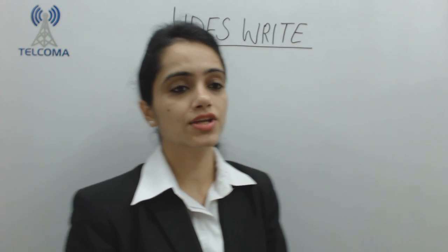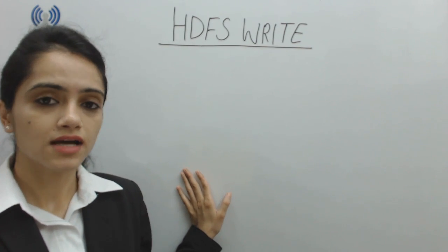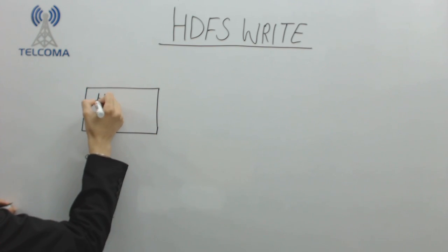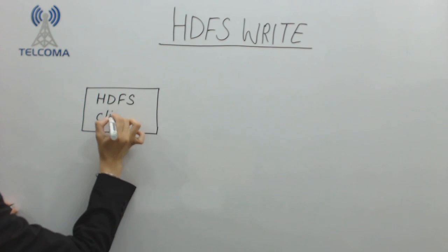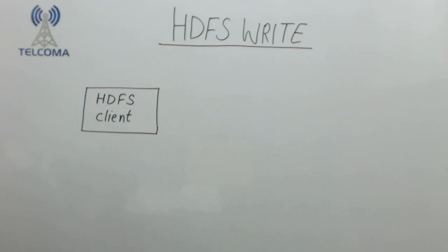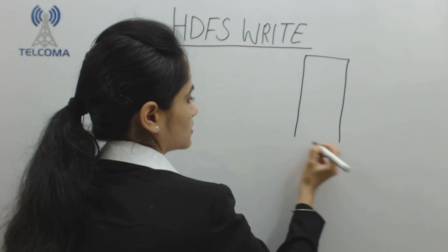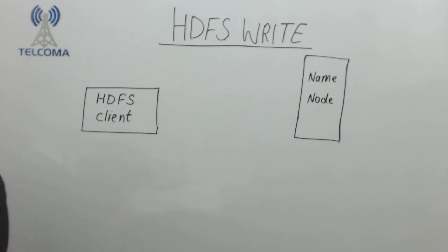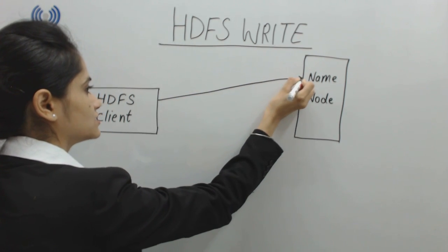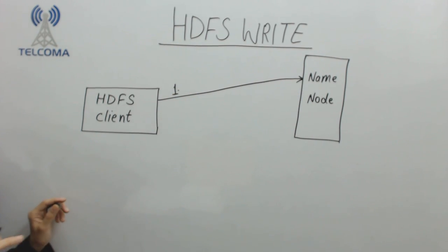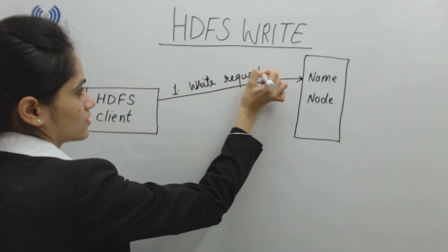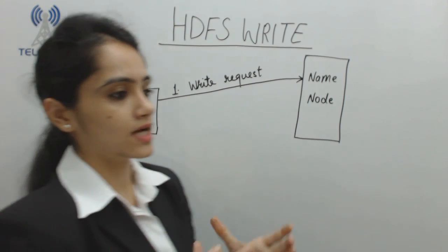In this class we will discuss the HDFS write operation — how in the Hadoop Distributed File System there is a write function. First of all, we have an HDFS client. This client will contact the master, which is the name node. The very first request from the HDFS client to the name node is a write request, indicating that the client wants to write some data.